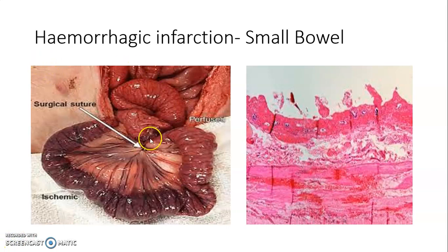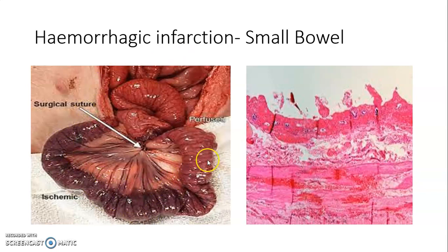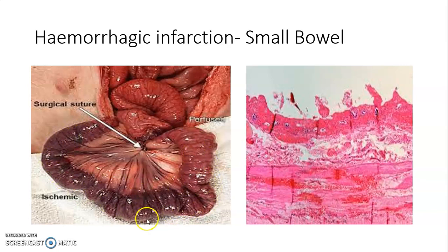Another example of red (hemorrhagic) infarct is the small intestine. Grossly, the small intestine appears tan-colored, and the microphotograph shows necrosis.